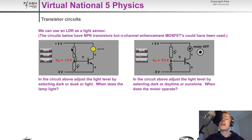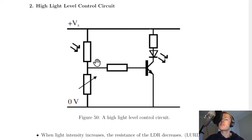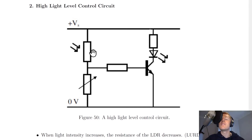The second circuit is the high light level control circuit, which looks at what happens when light intensity increases. You'll notice the difference from the first circuit: the LDR and the variable resistor have swapped positions. We now have the variable resistor as the lower component and the LDR as the upper component. Everything else — the transistor and the LED — remains the same.